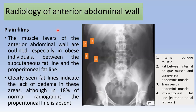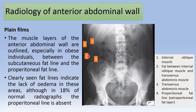Regarding radiology of the anterior abdominal wall — plain films: the muscle layers of the anterior abdominal wall are outlined especially in obese individuals between the subcutaneous fat line and the preperitoneal fat line. Clearly seen fat lines indicate the lack of edema in these areas, although in 18% of normal radiographs the preperitoneal line is absent. This plain film shows the internal oblique muscle line, fat between the internal oblique and transversus abdominis, the transversus abdominis muscle, the preperitoneal fat line, and the extraperitoneal fat layer.